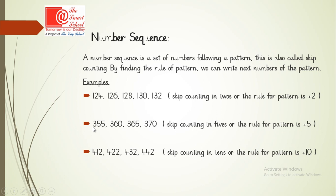Another example: 355, 360, 365, 370. The rule is plus 5 — skip counting in 5's. Next: 412, 422, 432, 442. The rule here is plus 10 — skip counting in 10's. So 412 plus 10 is 422, plus 10 is 432, plus 10 is 442. The rule for the pattern is plus 10.